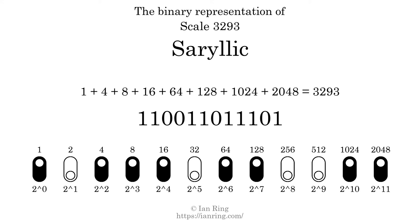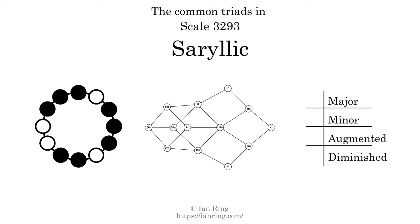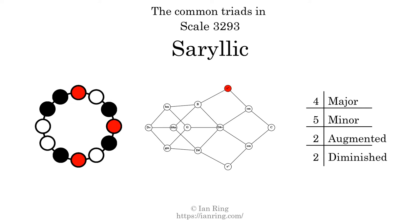Here are the common triads present in this scale. The diagram in the center is a graph of parsimonious voice leading between triads. There are 4 major triads, 5 minor triads, 2 augmented triads, and 2 diminished triads.